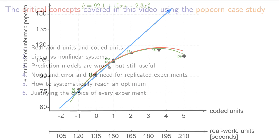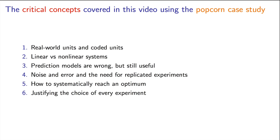So here's a summary of the important points you learnt in this video. You learnt how to convert between coded units and real world units and back again. We showed several times how models can be wrong, but are very useful despite their shortcomings. We saw a systematic approach for seeking the optimum, which consists of collecting experimental data, building a model, testing the model's predictions, and then rebuilding the model if it had shortcomings. Finally, we learnt to always justify the use of every experiment. Running a new experiment can be very, very costly. So careful planning to make sure that that experiment is actually needed is critical.